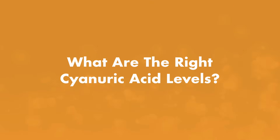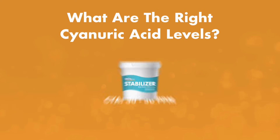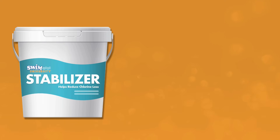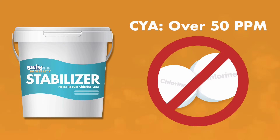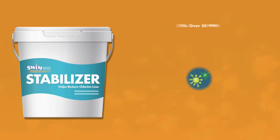What are the right cyanuric acid levels? We recommend keeping your cyanuric acid levels between 30 and 50 parts per million. If your cyanuric acid level is over 50 parts per million, it can inhibit your chlorine. You may notice algae growth, difficulty maintaining balanced chemistry, cloudy pool water, and decreased sanitizing.